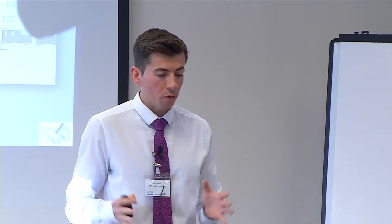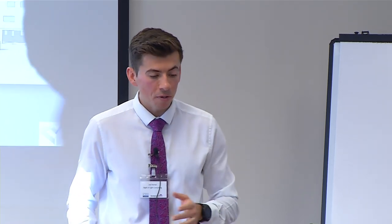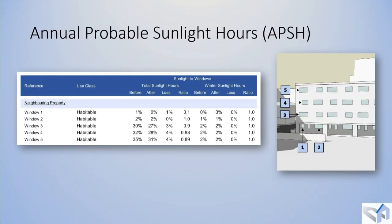The table of results for annual probable sunlight hours shows ratios all above 0.8. Window number 1 does experience a ratio loss below 0.8, but over the whole year it doesn't experience a loss of more than 4%, so it still meets those recommendations.